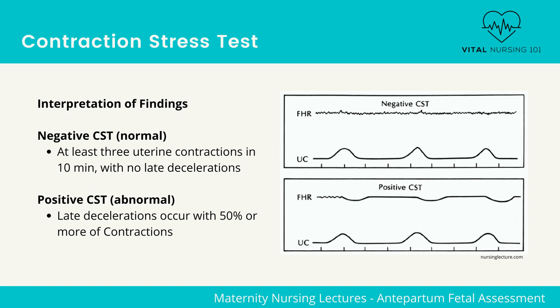Here are examples of positive findings: late decelerations occur with 50 percent or more of contractions. This is a non-reassuring finding and can be suggestive of uteroplacental insufficiency.